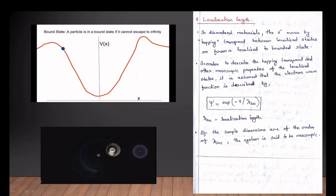We are going to describe the other properties as the localization length term. The wavefunction psi is equal to e raised to minus r by lambda_loc.